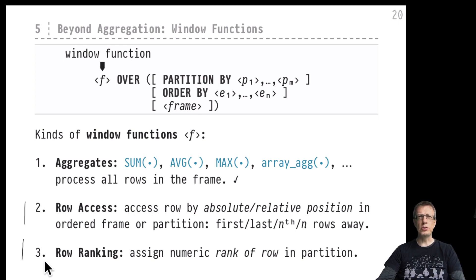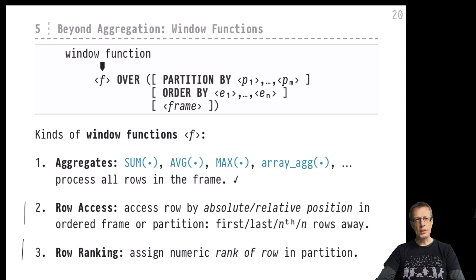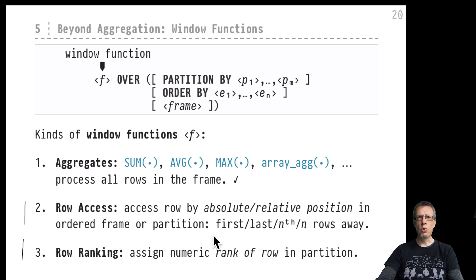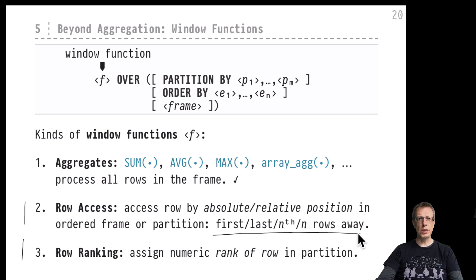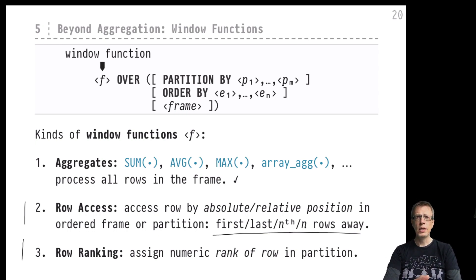There are two further types of window functions we haven't seen yet, and they operate entirely differently from aggregate functions. The first is row access — it makes sense to talk about the row just before or after the current row, the first or last in the frame, or the row that is three rows before the current row. Because all these frame and partition constructs impose a well-defined order, it makes sense to talk about positioned row access in absolute or relative positions.